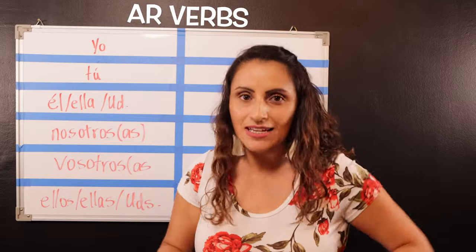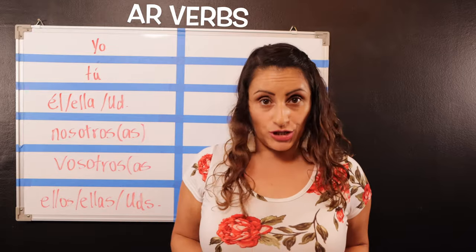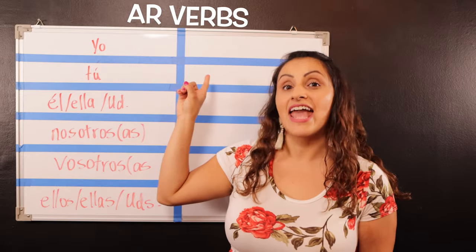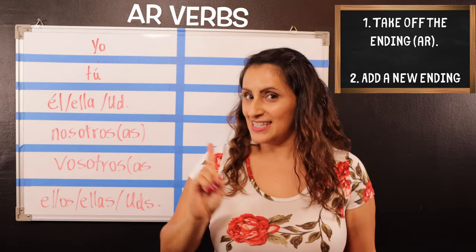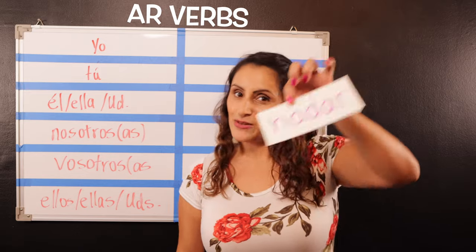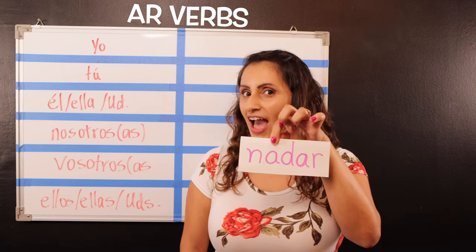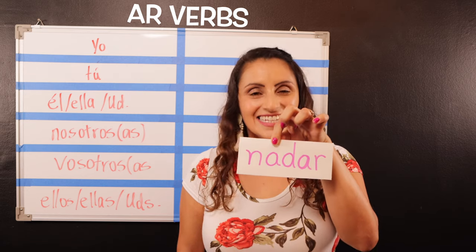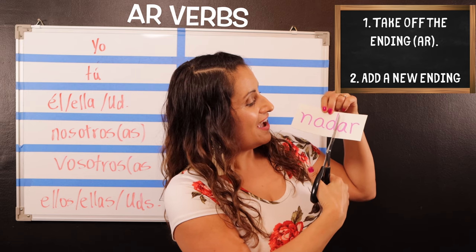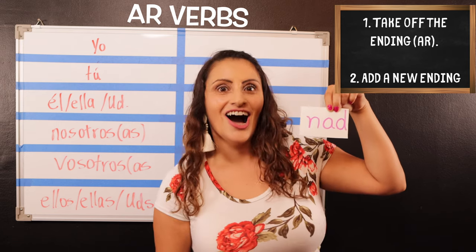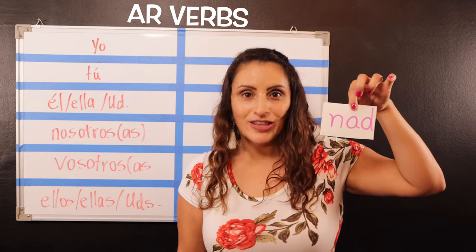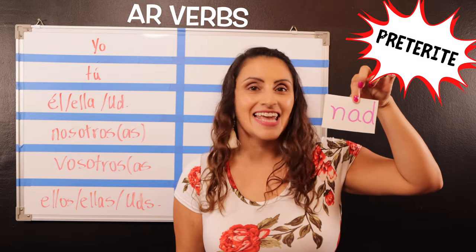We have our subject pronouns. Let's quickly review how do we conjugate a verb. The rules say: number one, you get rid of the AR because we're focusing on AR verbs today, and number two, you add a new ending. Since we're talking about new endings, let's focus on learning those new endings. So the first thing we're going to do is look at the verb nadar — to swim. Rule number one says we get rid of the AR. It's gone, and now we have to add a new ending to this stem. Let's learn the endings for AR verbs in the preterite.